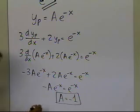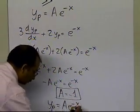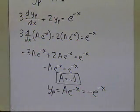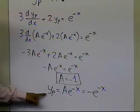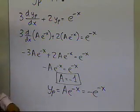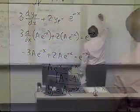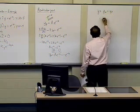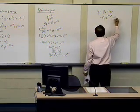So the particular part of the solution is a times e to the power minus x, which equals minus e to the power minus x. At this stage, you add the homogeneous and particular parts: y equals yh plus yp, which is k1 times e to the power minus two-thirds x, minus e to the power minus x.